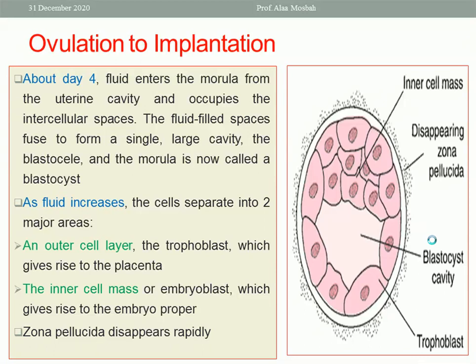The 12 to 16 blastomere stage is a solid ball resembling a mulberry and is called the morula, which enters the uterine cavity from the tube. About day four, fluid enters the morula from the uterine cavity and expands the intercellular spaces; this fluid collects to form a large cyst — the blastocyst — which is now ready for implantation.